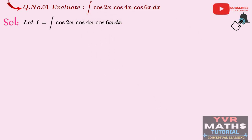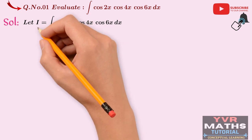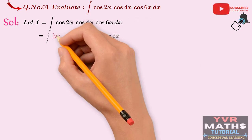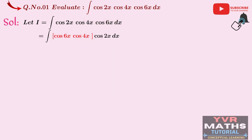First, from the given integrand, take the trigonometric ratios in decreasing order of their angles. Here we have three angles: 2x, 4x, 6x, so we write: integral cos(6x)·cos(4x)·cos(2x) dx. Now take the first two terms, cos(6x)·cos(4x), as one combination, with cos(2x) dx separate. Using the identity cos(A)·cos(B) = ½·[cos(A+B) + cos(A−B)], here A = 6x and B = 4x.